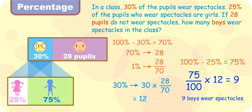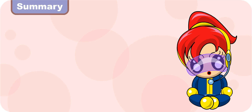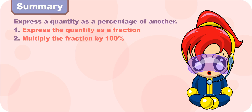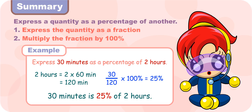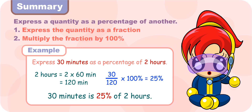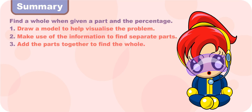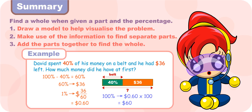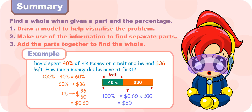Excellent, Turbo Girl. Turbo Girl, what have you learnt today? I have learnt how to express a quantity as a percentage of another. Firstly, I express the quantity as a fraction of another. And then I multiply the fraction by 100%. I have also learnt how to find the whole when given a part and the percentage. I draw a model to help me visualize the problem. I then make use of the information and knowledge of percentage to find the separate parts. And finally, I add them together to find the whole.